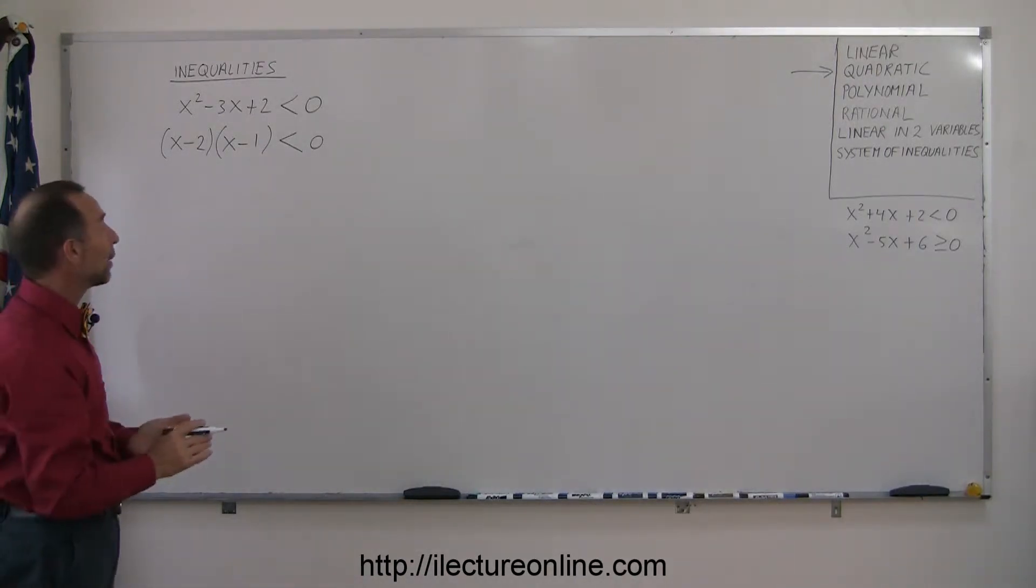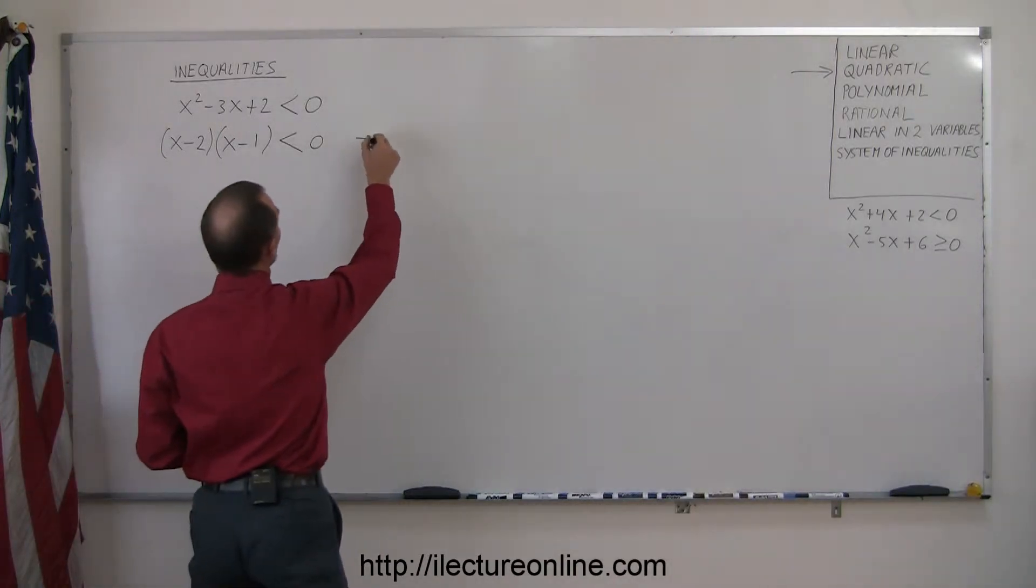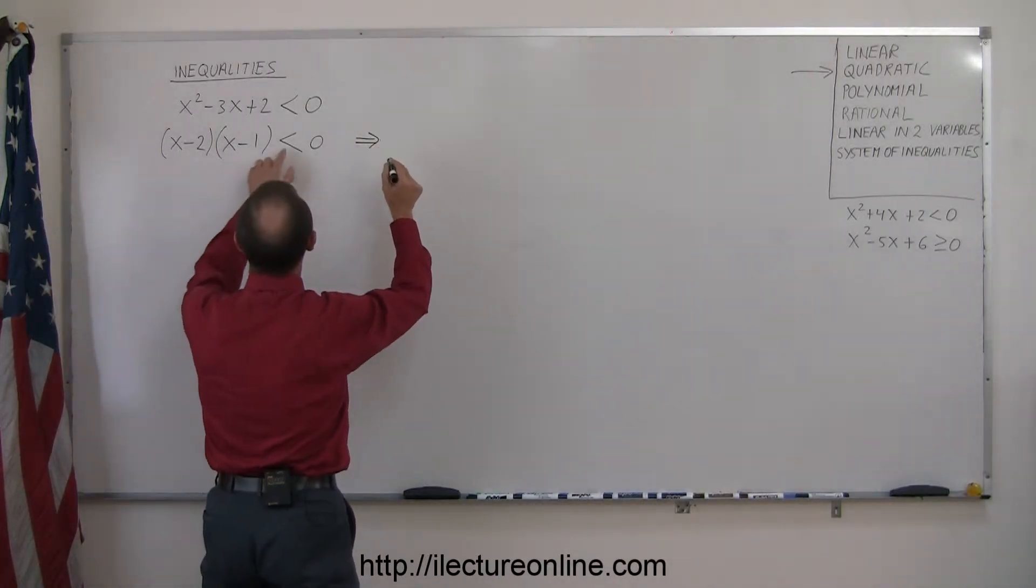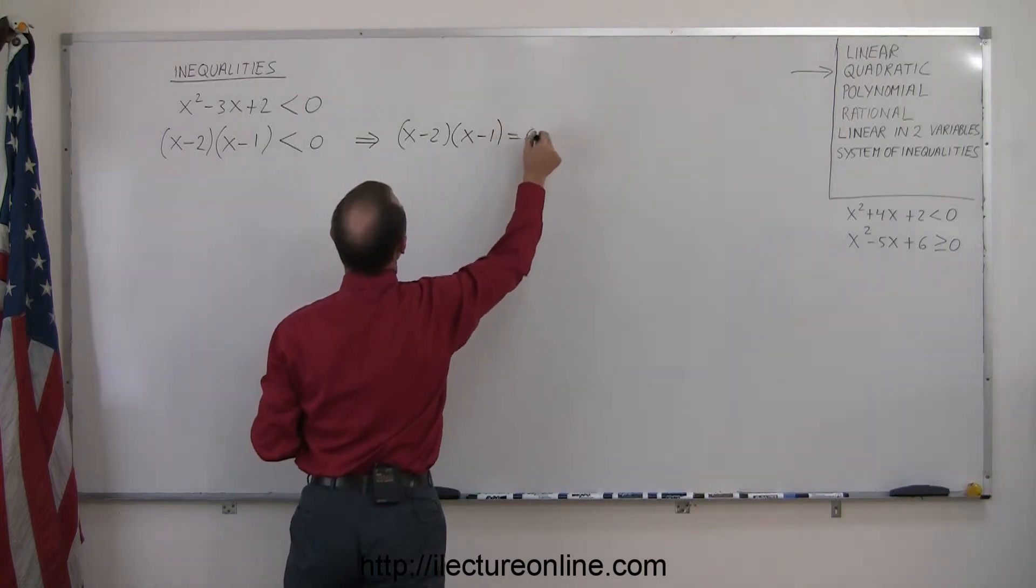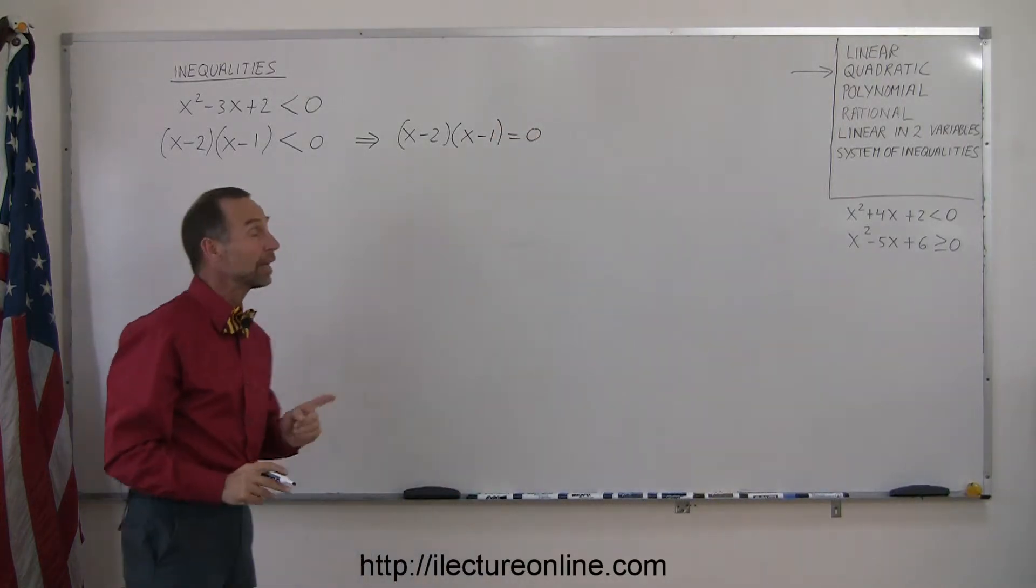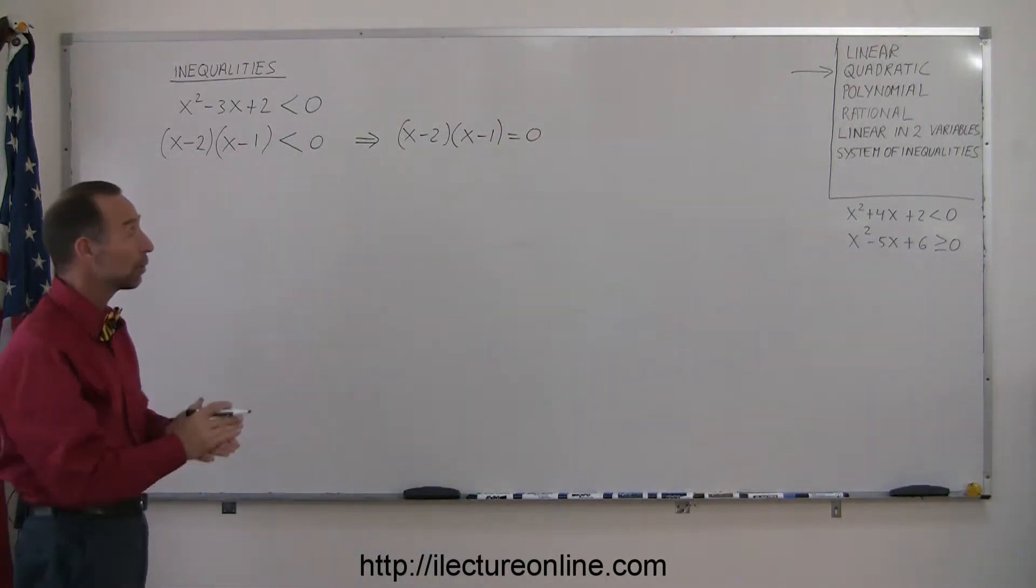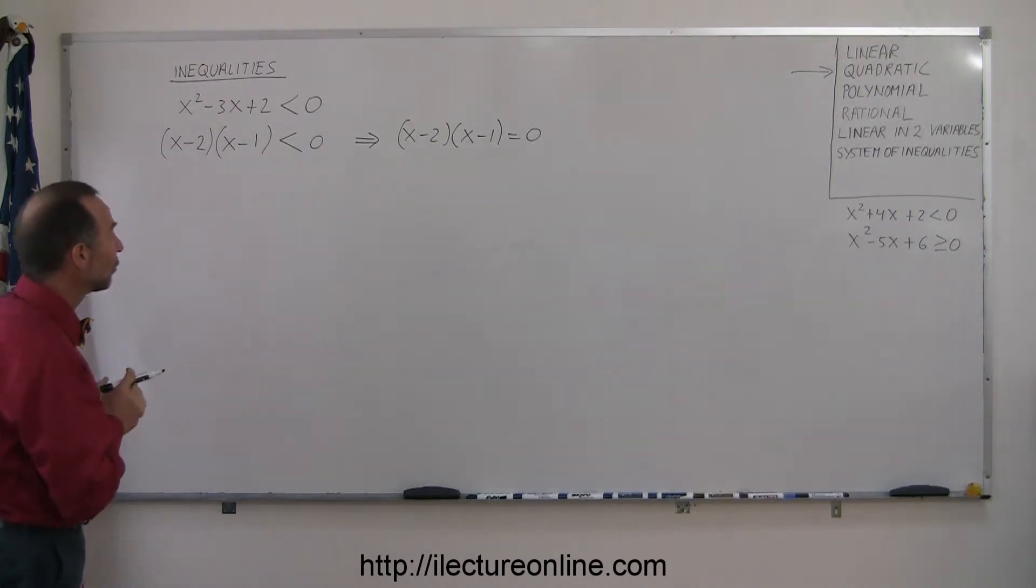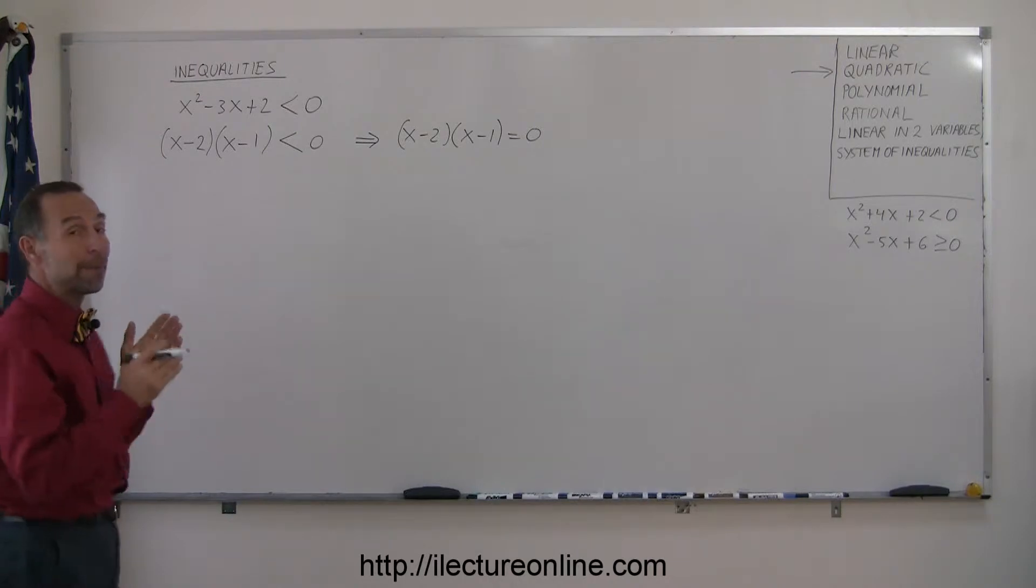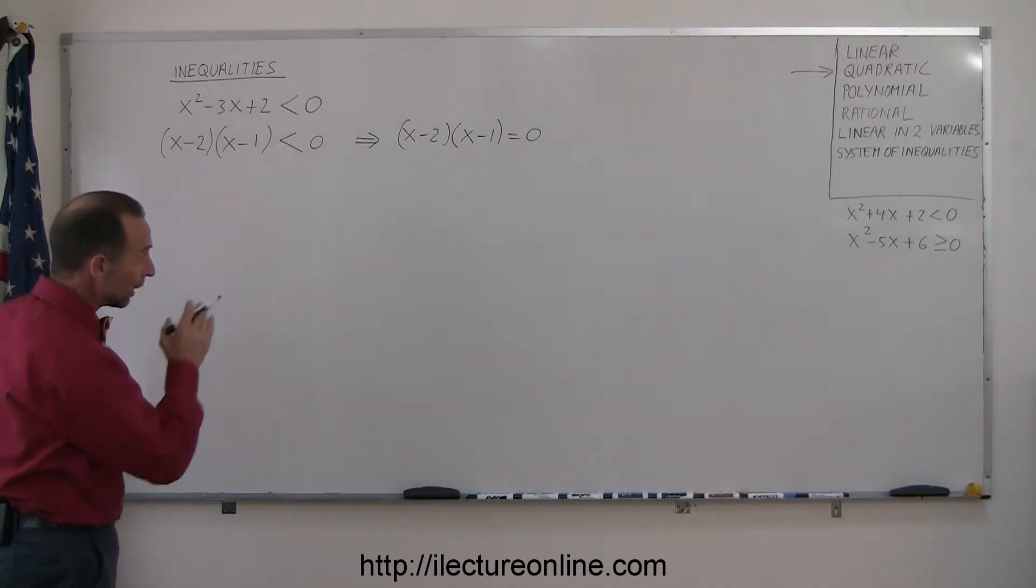Now you go ahead and write the equivalent equation of that inequality. In other words, you write the very same thing, but you write an equal sign there. Write (x-2)(x-1) = 0. The reason why we do that is we want to find the critical points of our solution, meaning the points that delineate or give us the boundary of the sets of solutions.